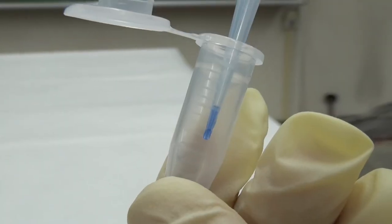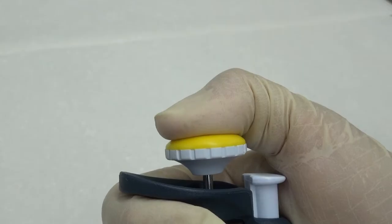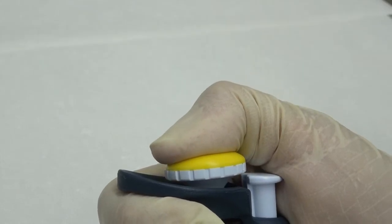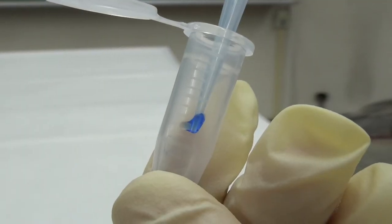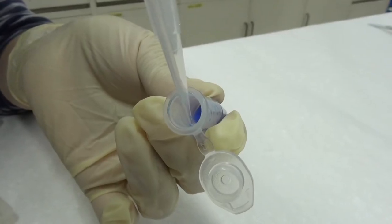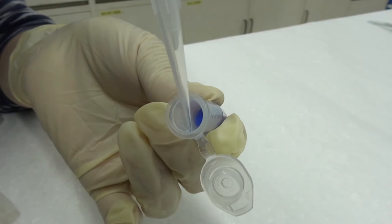Some liquid remains in the tip because of adhesion. Thus, press the operating button to the second stop to blow out the residual liquid. Remove the tip from the vessel, sliding it along the inner wall of the vessel.